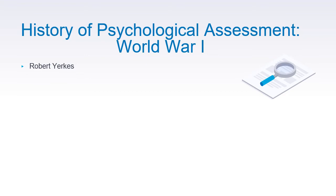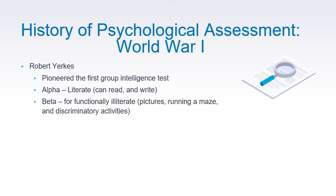One of the famous psychologists who contributed during World War I is Robert Yerkes. He pioneered the first group of intelligence tests, which is divided into two: the Alpha and the Beta. The Alpha is used for those applying soldiers or potential militants who can read and write — those who are literate. For those who are illiterate, he used the Beta test for functionally illiterate militant applicants.